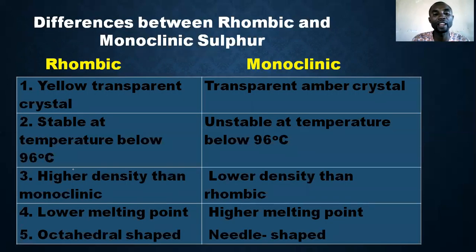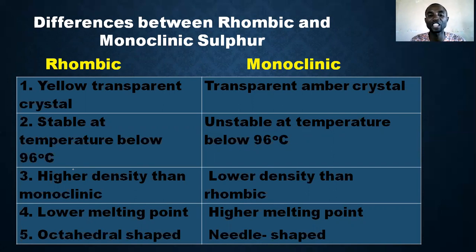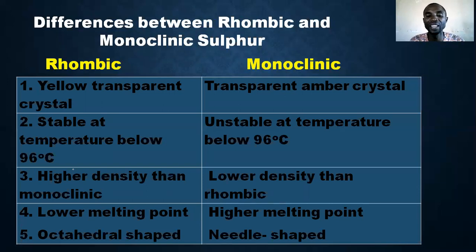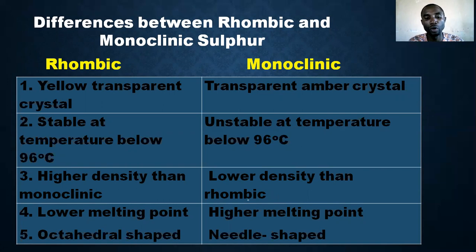The differences between rhombic and monoclinic sulfur: rhombic forms yellow transparent crystals while monoclinic forms transparent amber crystals. Rhombic is stable below 96°C while monoclinic is unstable below 96°C. Rhombic has higher density than monoclinic, while monoclinic has lower density than rhombic.